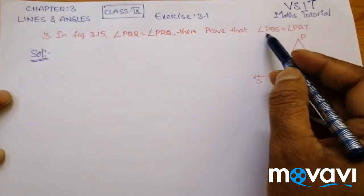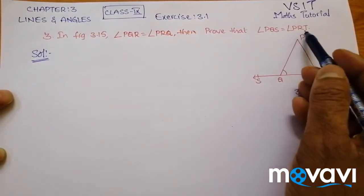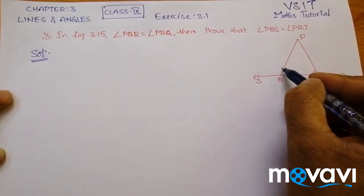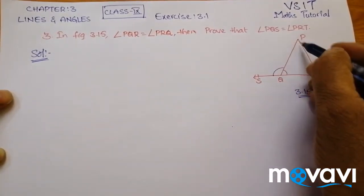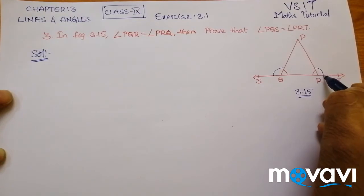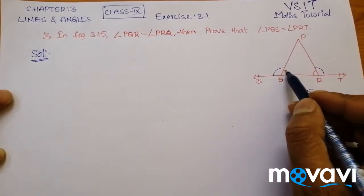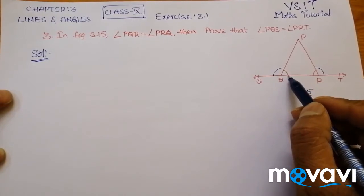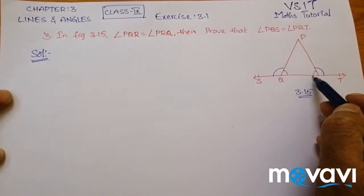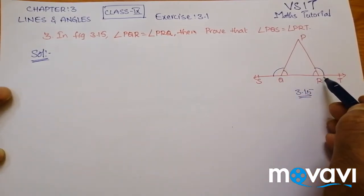Then prove that angle PQS is equal to angle PRT — that is, this angle is equal to this angle. Given that angle PQR equals angle PRQ, we have to prove that angle PQS equals angle PRT.